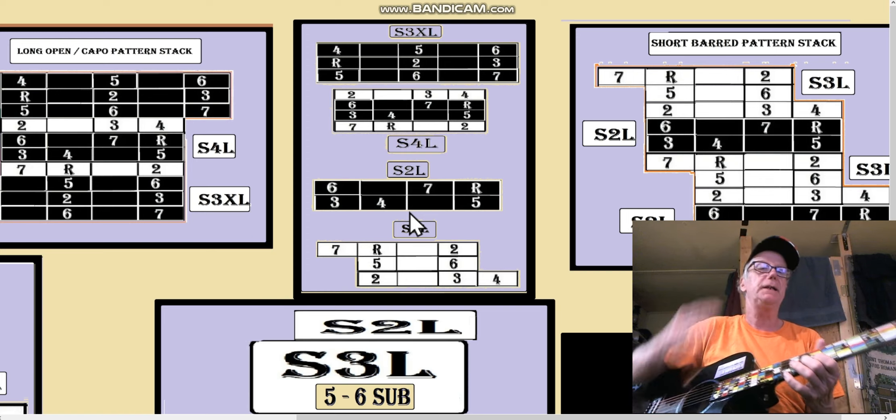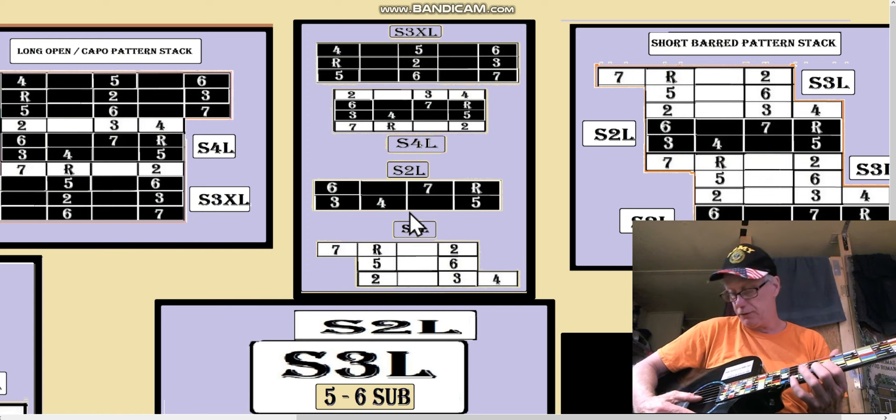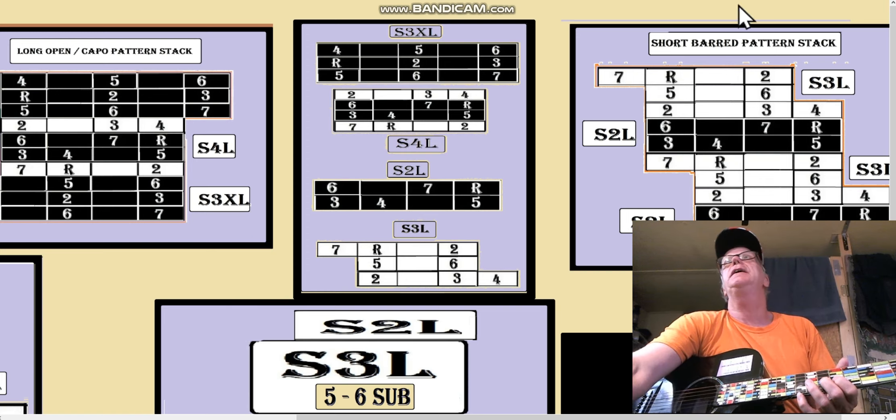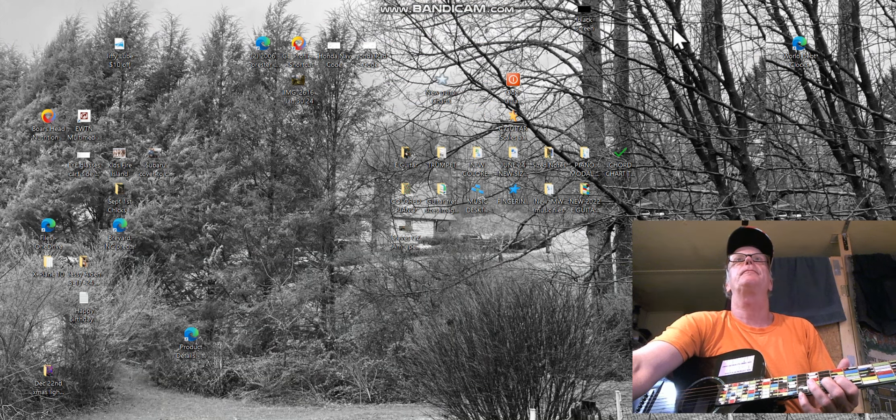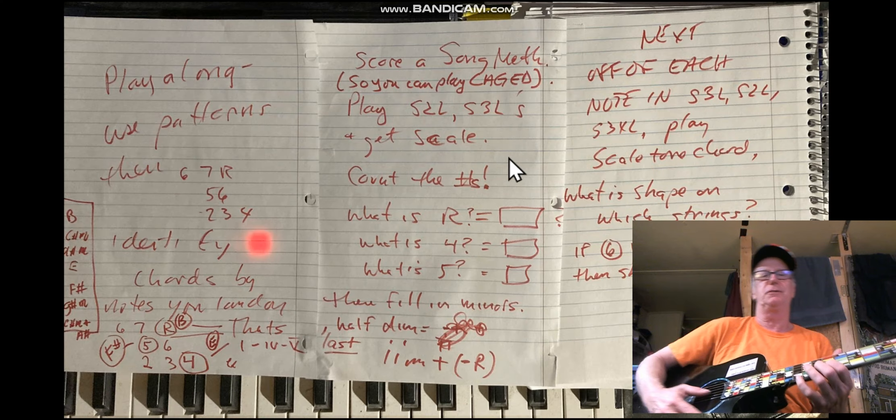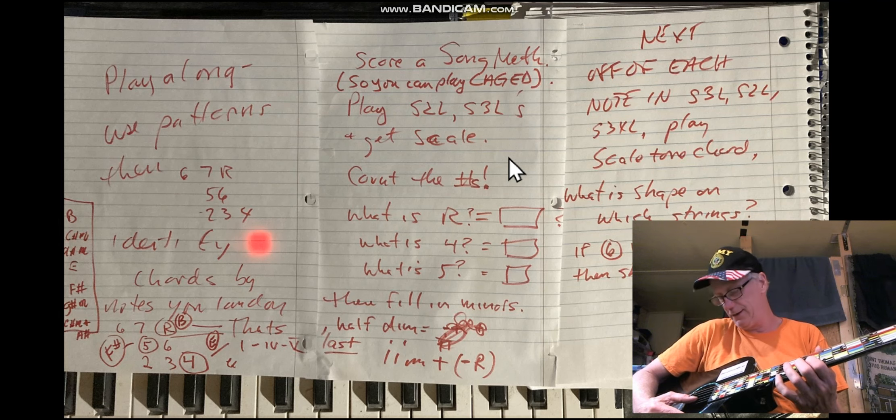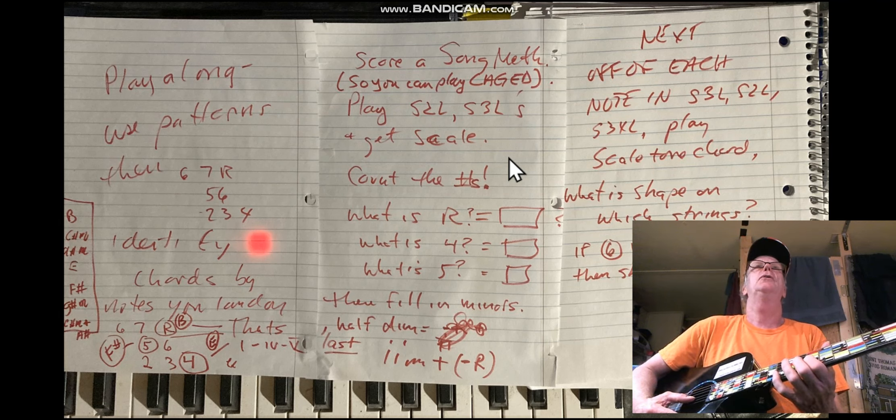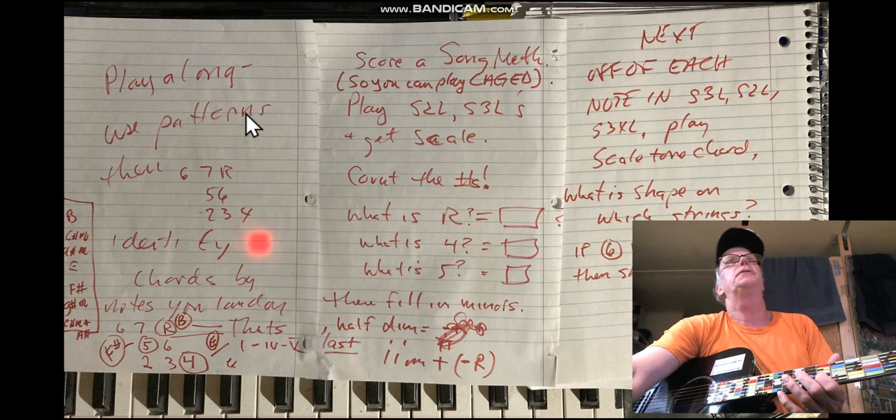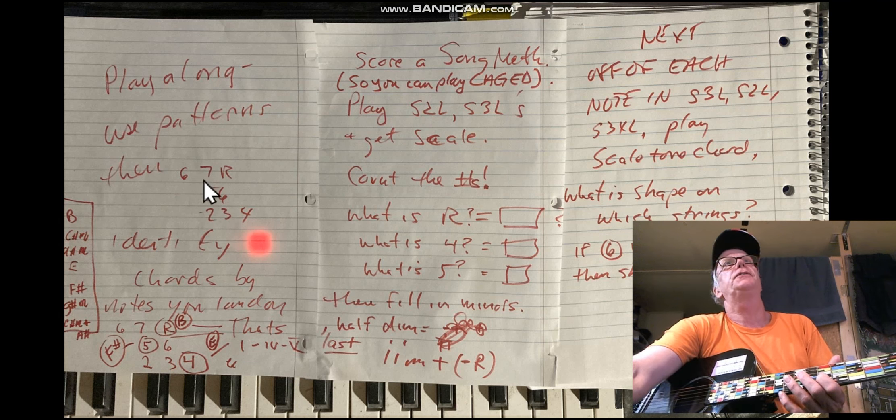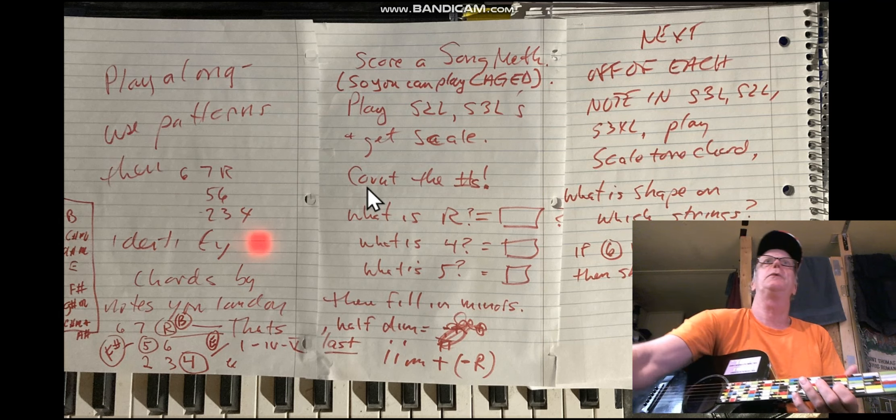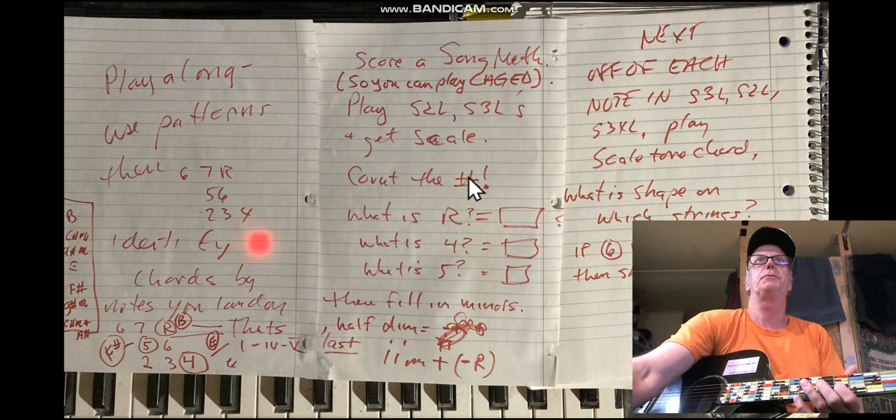I gotta pay attention to where I am, so I'm gonna say the patterns to myself. Oh look, there's my neighbor's house - that's just a picture, I don't have cameras. Here's the play along to use the pattern, so I'm right here: six, seven, root, five, six, two, three, four.